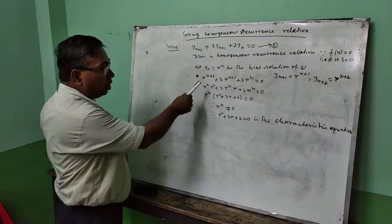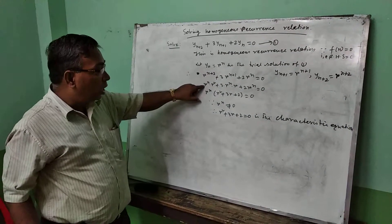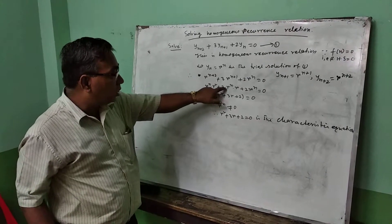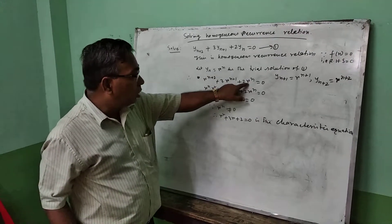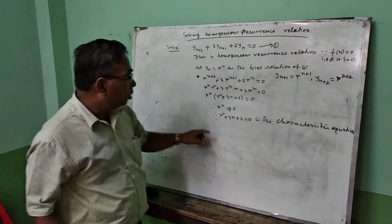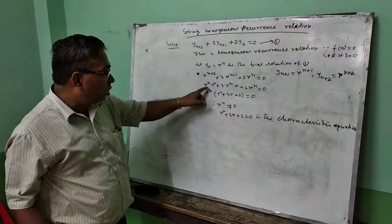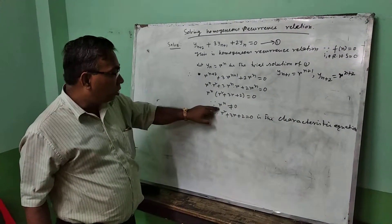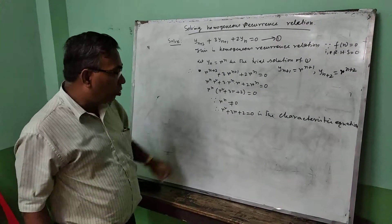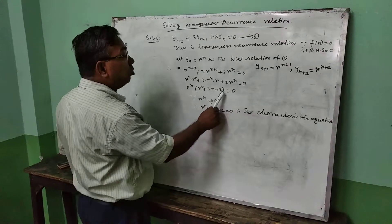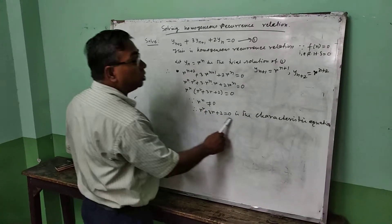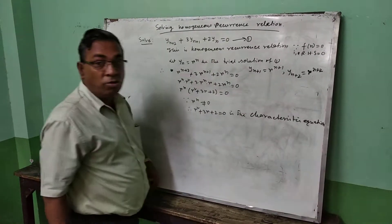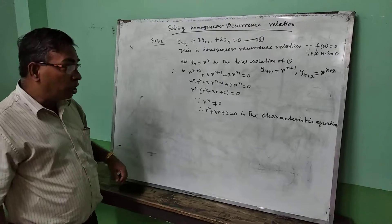Now this can be written as r^n · (r² + 3r + 1) = 0. Taking r^n common, since r^n is not equal to 0, we get the characteristic equation: r² + 3r + 2 = 0.